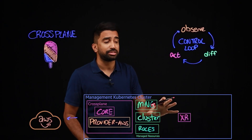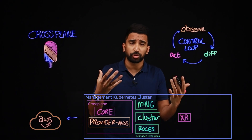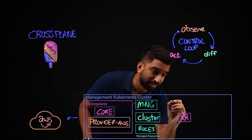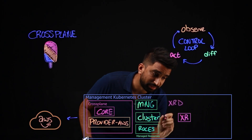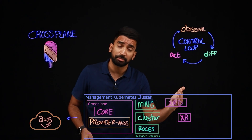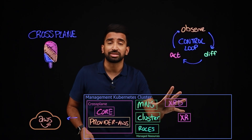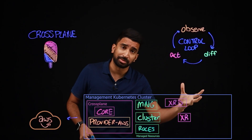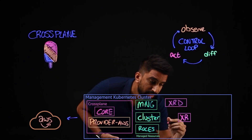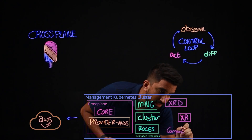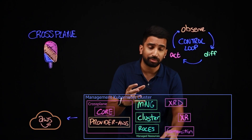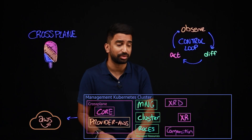Now, for an XR composite resource, we're going to need a couple more things to define that resource itself. We're going to need an XRD — a composite resource definition — that's going to define the composite resource itself: the parameterization, the name of the composite resource, which enables us to make a claim against it. In addition, we're also going to have compositions. A composition is going to actually determine what happens once the custom resource is created — so creating the underlying managed resources, for example.